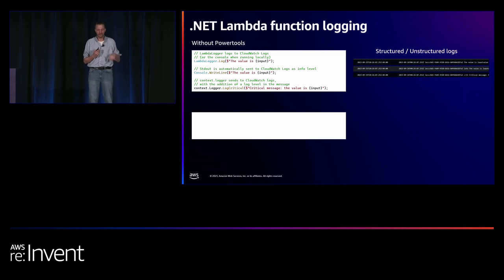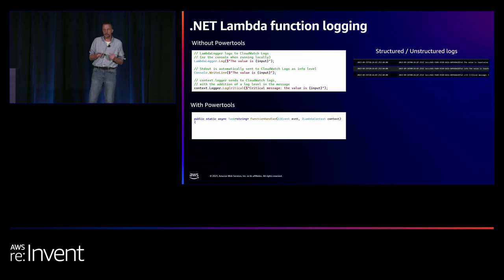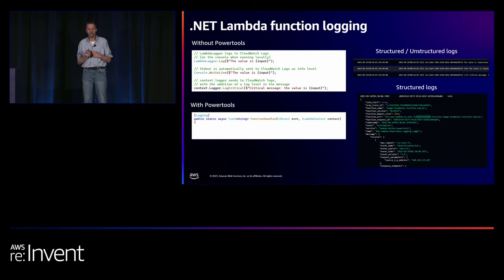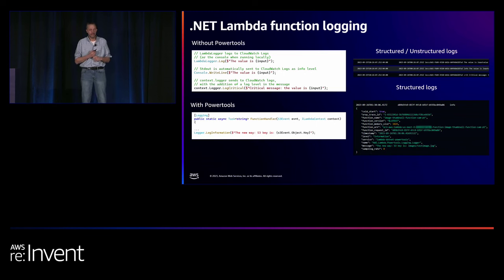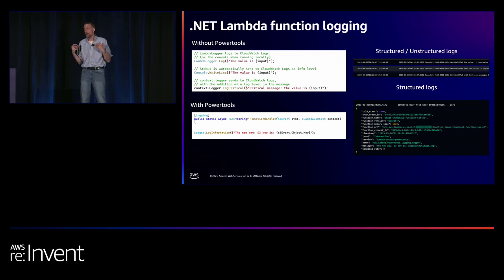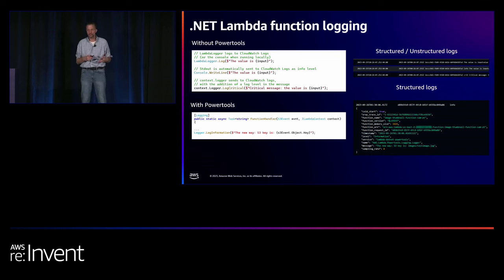If you want to automatically collect more detailed contextual information about your handlers, when you use PowerTools for logging, all you need to do is add the Logging attribute to your function. With one configuration, you can capture the event that triggered your Lambda function to the logs. Using the logger class that comes with PowerTools, you can create a uniform log structure that includes additional context with every log — such as X-Ray trace ID, whether it's a cold start, and other function information. You can even pass in objects and they'll automatically get serialized into your structured logs, making it easier to query logs with CloudWatch Log Insights.